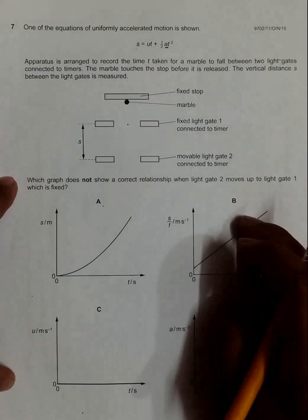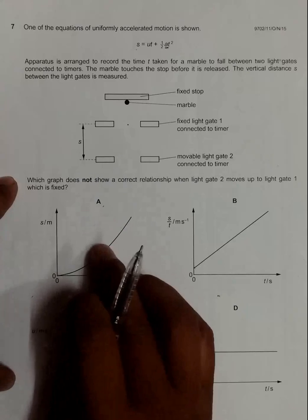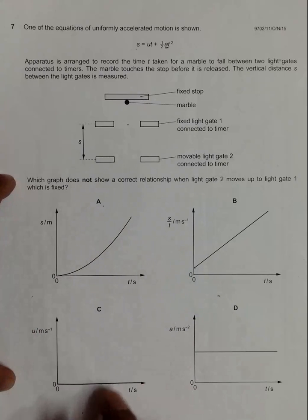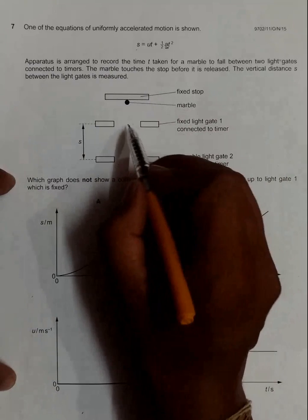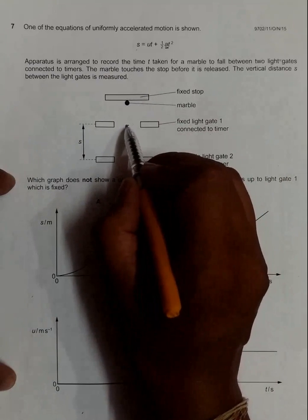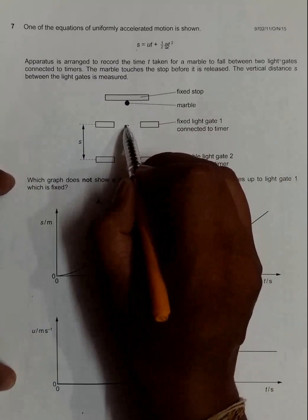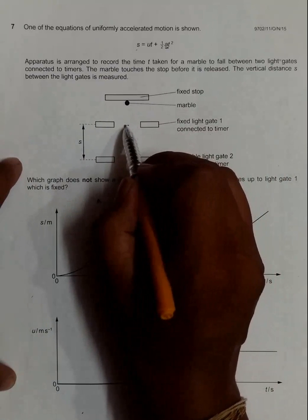The parabolic variation of s is also a correct choice, but in case of choice C, it says that u remains 0. When it falls, there should be definitely some u here. u is measured not from here but here, so there should be some sort of velocity here.